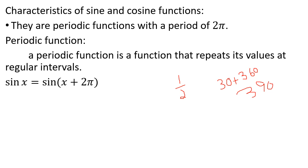So, sin x equals sin of x plus 2pi, and cos x equals cos of x plus 2pi. The period is 2pi.